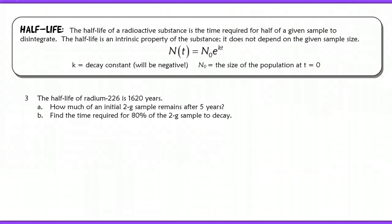You'll notice that the half-life model is exactly the same. The only difference is that our k value is going to be negative. Our decay constant is negative because it's a decay model. I also talked about this already, but I just want to reiterate that half-life is an intrinsic property of a substance, so it does not depend on the given sample size. So if it's a small sample size or a very large sample size, it takes the same amount of time in order for it to decay to have a half-life.